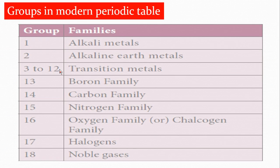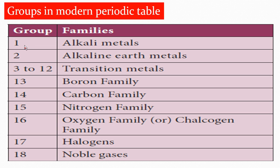The groups in the Modern Periodic Table: Group 1 is called alkali metals. Group 2 is called alkaline earth metals. Groups 3 to 12 are called transition metals. Group 13 is called the boron family. Group 14 is called the carbon family. Group 15 is called the nitrogen family. Group 16 is called the oxygen family or chalcogen family. Group 17 is called halogens — fluorine, chlorine, bromine, iodine. Group 18 is called noble gases or inert gases — neon, krypton, xenon — because these elements are inert or unreactive.